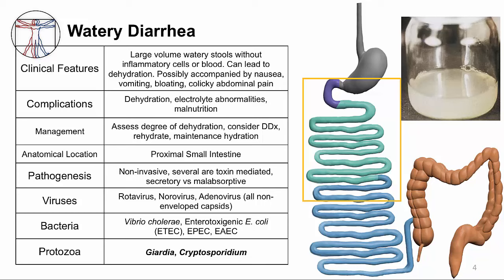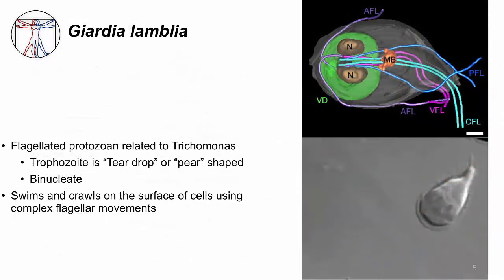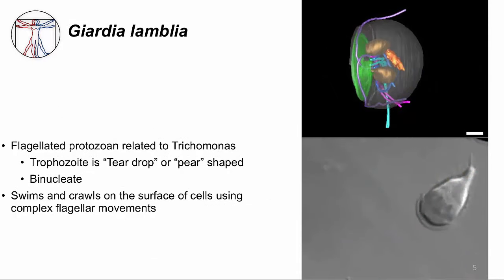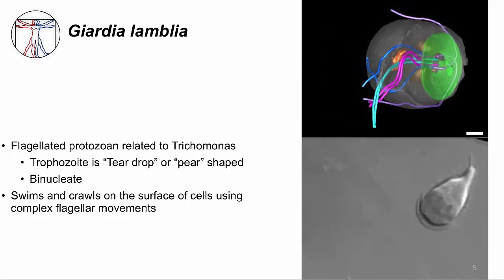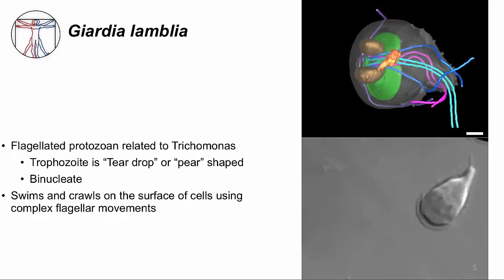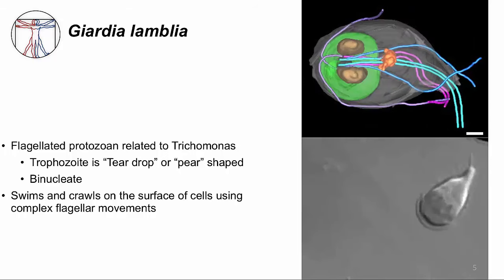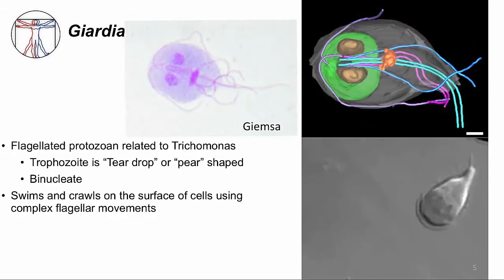I'll talk about two protozoa that cause watery diarrhea: Giardia and Cryptosporidium. For Giardia, the trophozoite is the only stage. It's teardrop- or pear-shaped and has two nuclei that look like eyes. It also has flagella. You can see all these structures in the 3D reconstruction made from electron micrographs. The two brown structures are the nuclei, and the ventral disc is the green structure — I'll talk about this more later — and the stringy structures are the flagella.